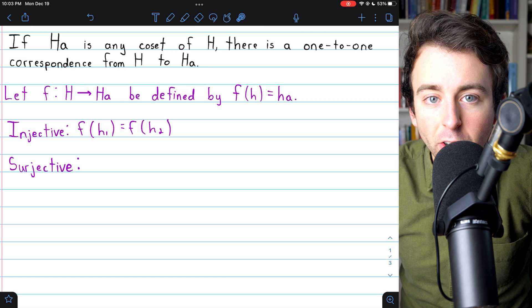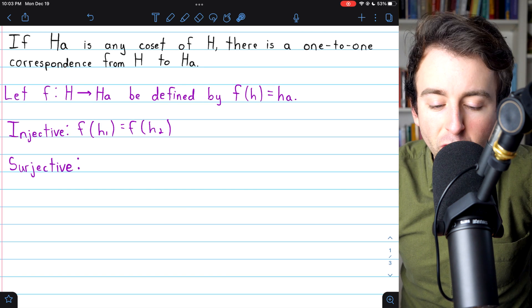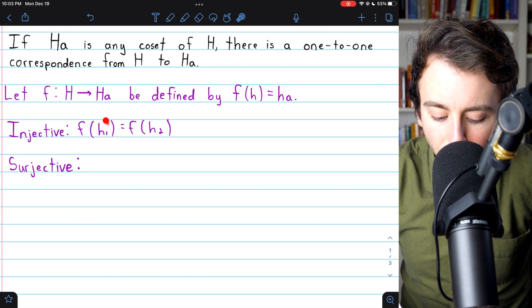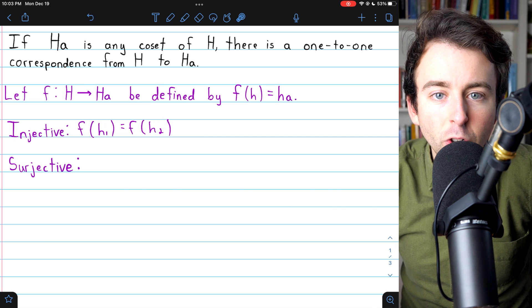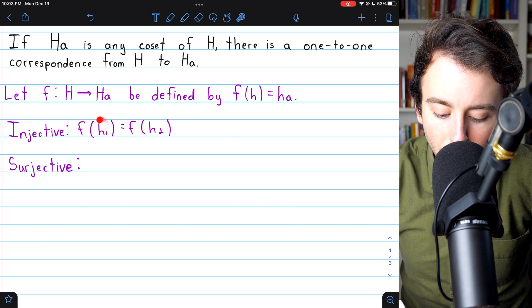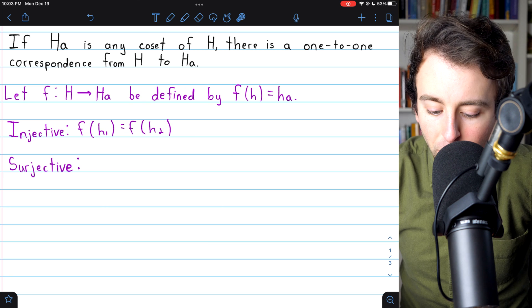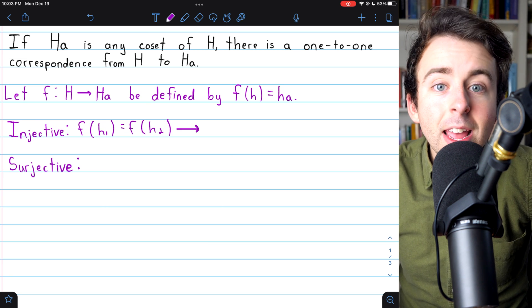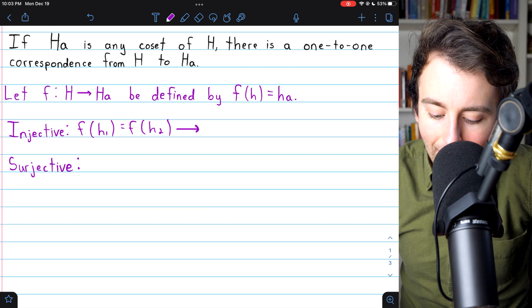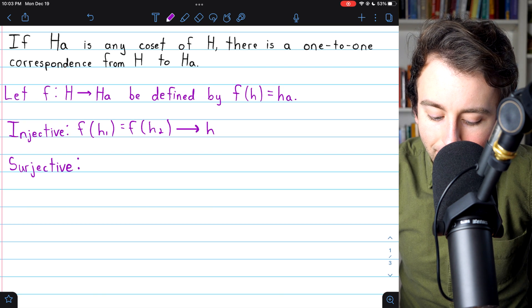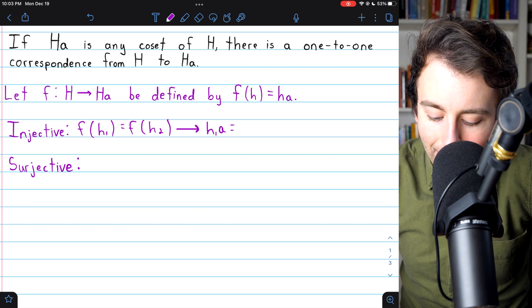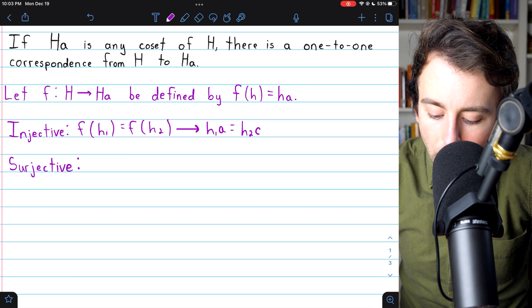to prove F is injective, we just need to show that this forces h₁ and h₂ to be equal. If the outputs are equal, these inputs must be equal. By definition of the function, F(h₁) equaling F(h₂) means that h₁ times a equals h₂ times a.